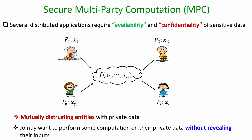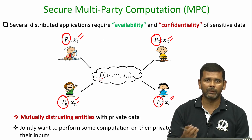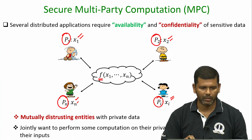Just to recall, this is the blueprint of secure multiparty computation. We have a set of mutually distrusting parties with some private data, and there is some publicly known function. The goal is to design a mechanism which allows the parties to obtain the result of this function f on the inputs x1 to xn, and in the process learn nothing about the other parties' data other than what the party can itself infer from its own input and the function output.